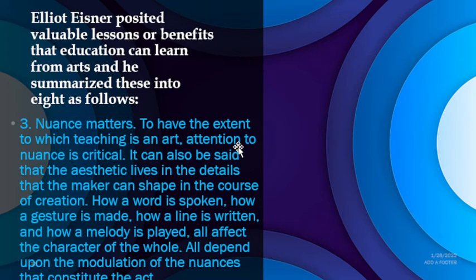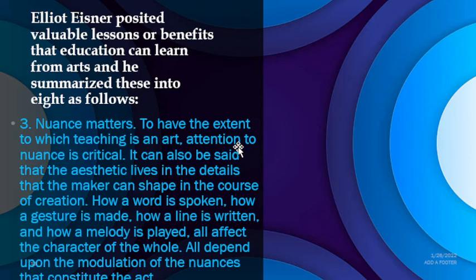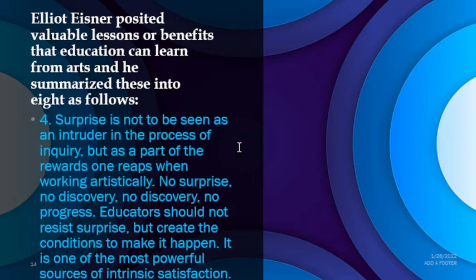Third, nuance matters. To the extent that teaching is an art, attention to nuance is critical. The aesthetic lives in the details that the maker can shape in the course of creation. How you move, how you have prepared for the movement, affects the outcome of the dance — the same with music, painting, and any form of art. How a word is spoken, how a gesture is made, how a line is written, how a melody is played — all affect the character of the whole.